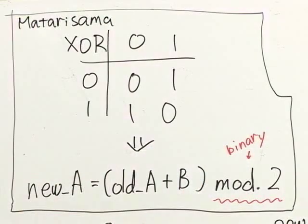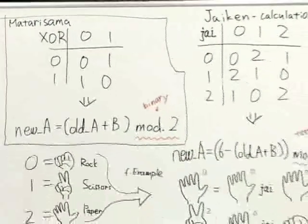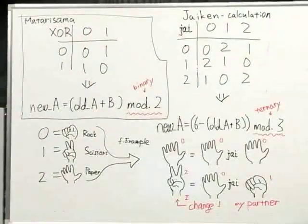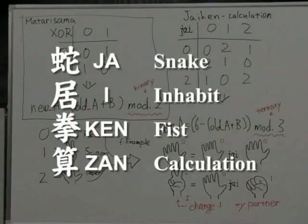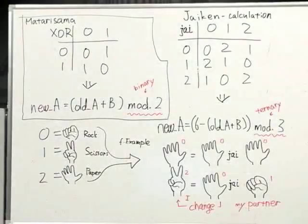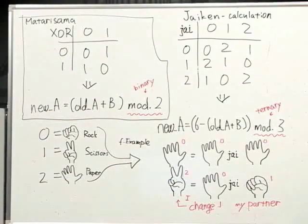The XOR calculation used in Matari-sama was based on the formula: new A = old A + B modulo 2. But the calculation performed in the thinking machine is expressed as new A = 6 minus old A + B modulo 3, called the Jaichen calculation. This was often used in reverse simulation music works. As suggested by the modulo operations, the XOR calculation is a binary calculation that handles two states, and the Jaichen calculation performs a ternary calculation that handles three states.